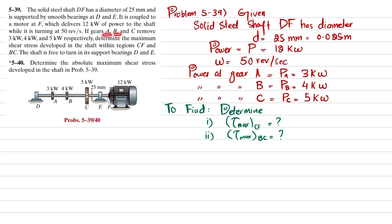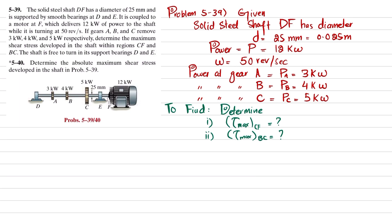Gear A, B, and C remove 3kW, 4kW, and 5kW respectively. Determine the maximum shear stress developed in the shaft in region CF and BC. The shaft is free to turn about in its support bearings at D and E.